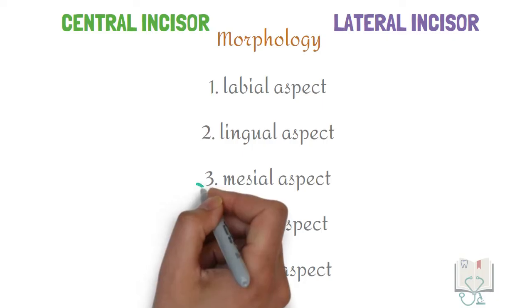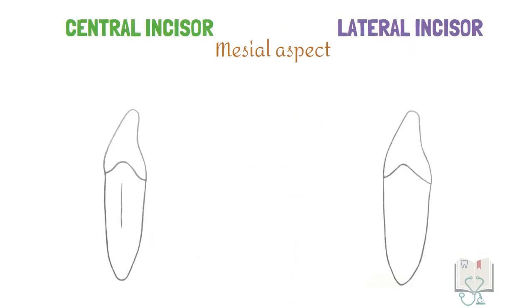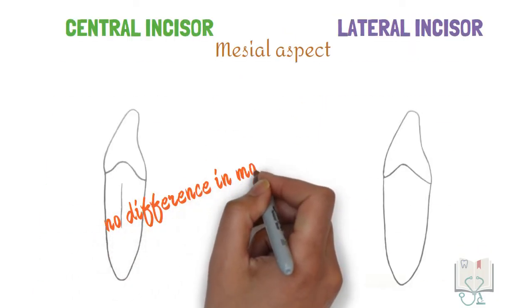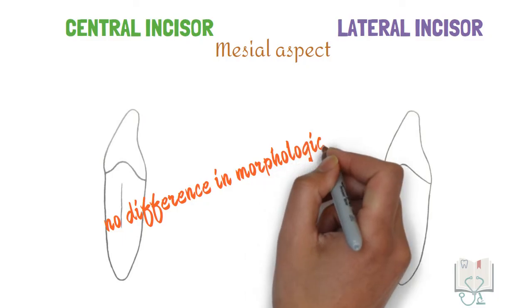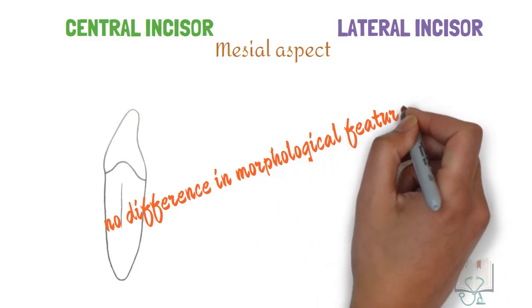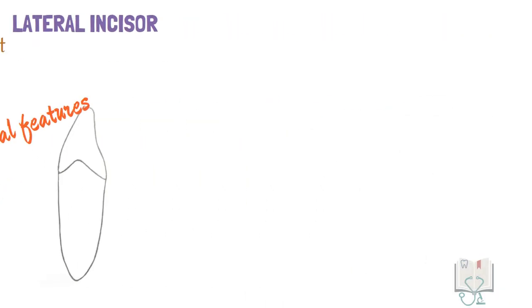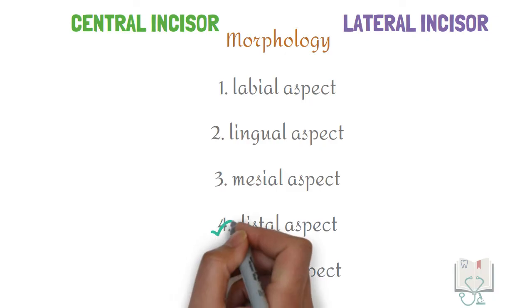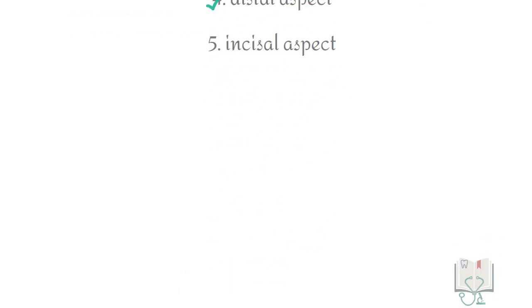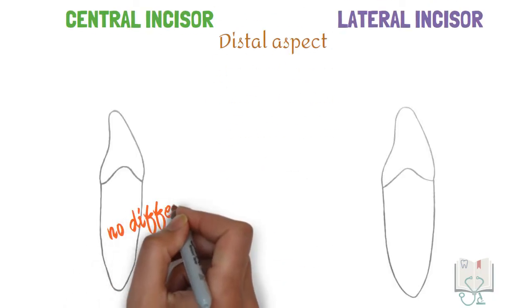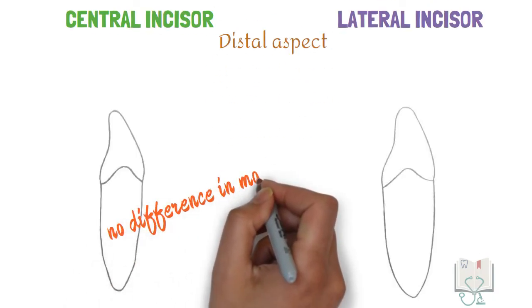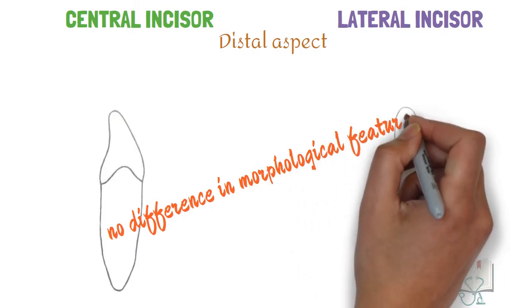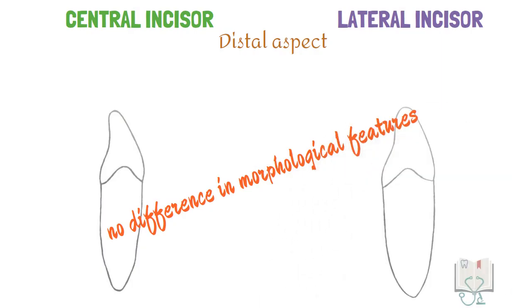Next, the mesial aspect. There are no differences in the morphological features of the central incisor and lateral incisor. Next, the distal aspect. Similar to the mesial aspect, there are no differences in the morphological features of the central incisor and lateral incisor.